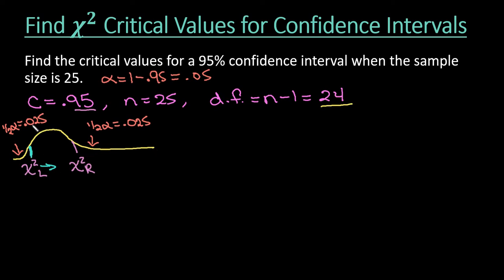So I can either do one minus 0.025, or I can take that there's 95 percent here, 0.95, plus the 0.025. Either way, we can see that our area to the right is going to be 0.975. So this is our area to the right.